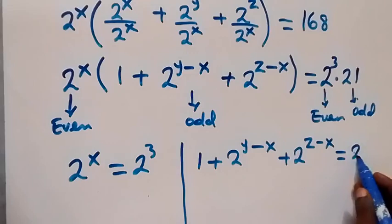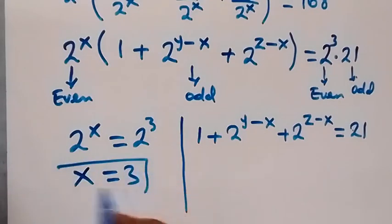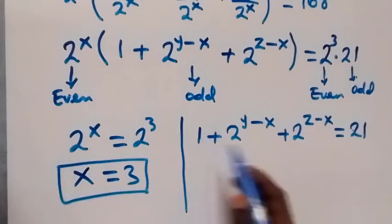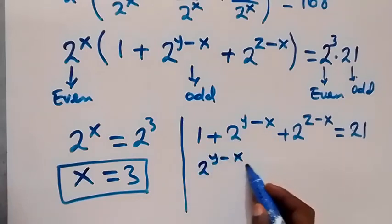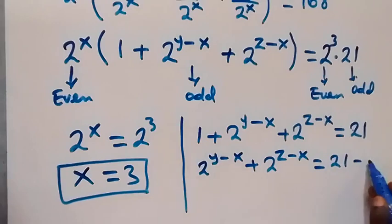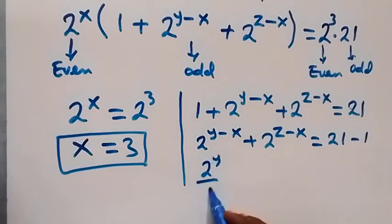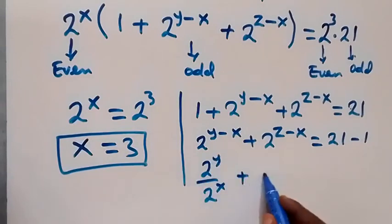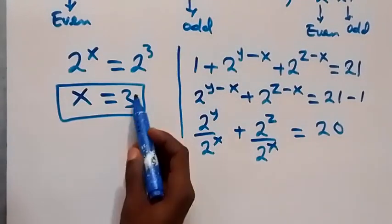Taking 1 to the other side, we have 2 raised to power (y minus x) plus 2 raised to power (z minus x) equals 20. Using the law of indices we write this as 2 raised to power y over 2 raised to power x plus 2 raised to power z over 2 raised to power x equals 20. From here we also get x equals 3.